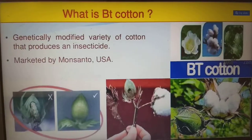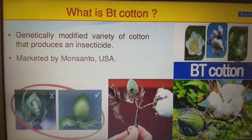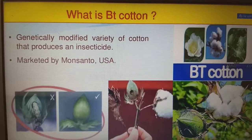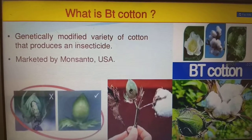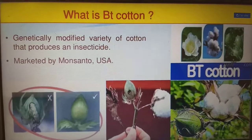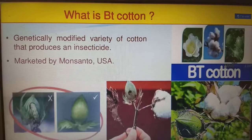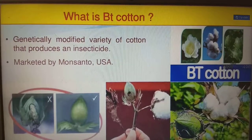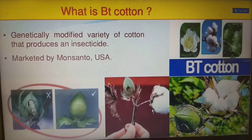What is Bt cotton? Bt cotton is the genetically modified variety of cotton that produces an insecticide, marketed by Monsanto of USA.